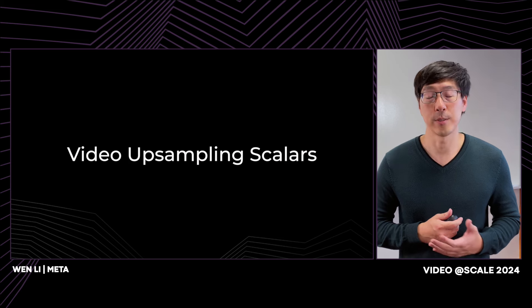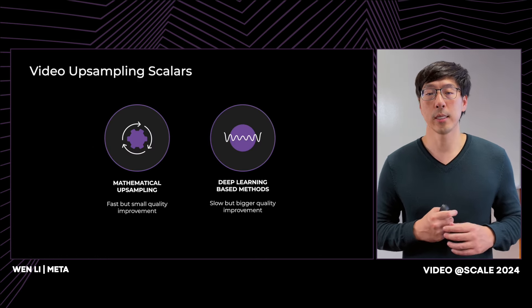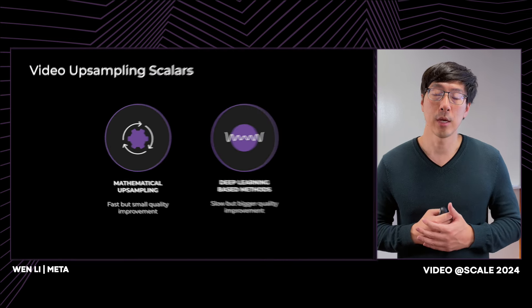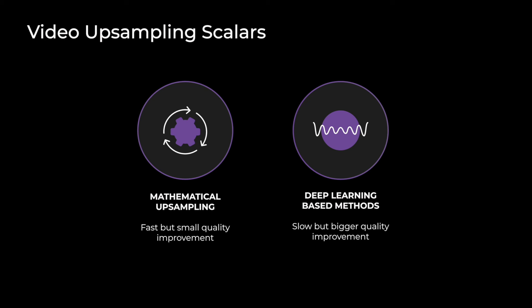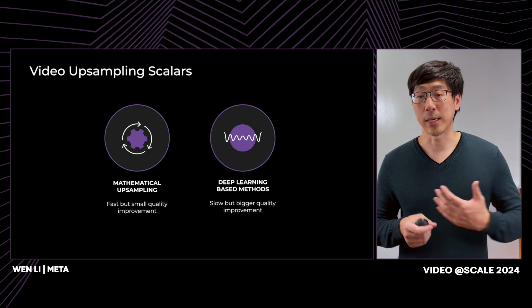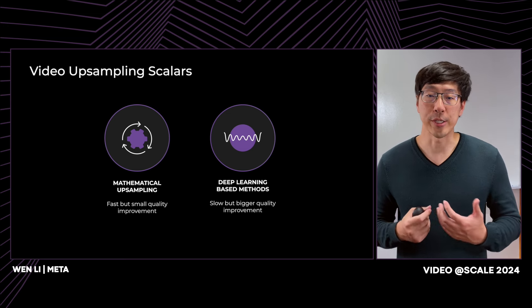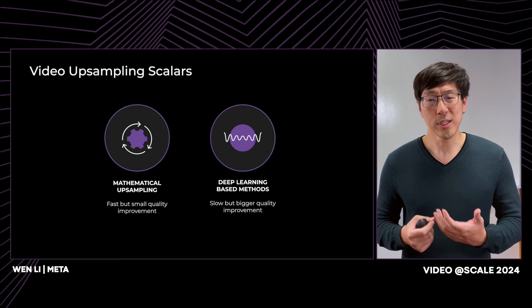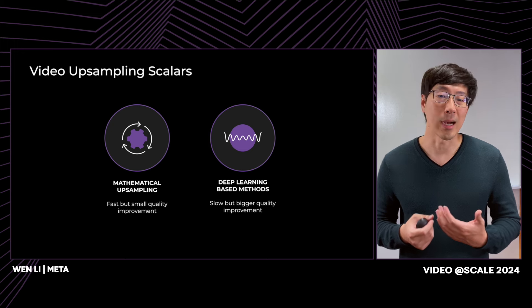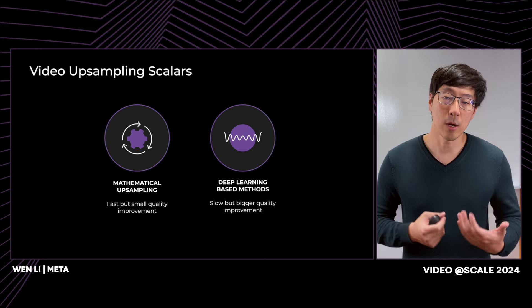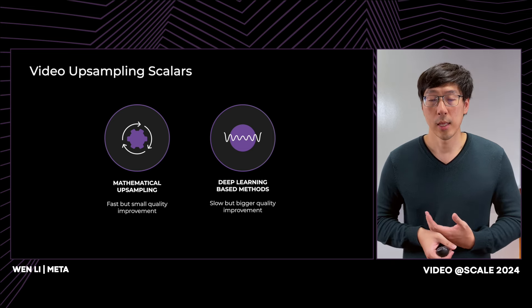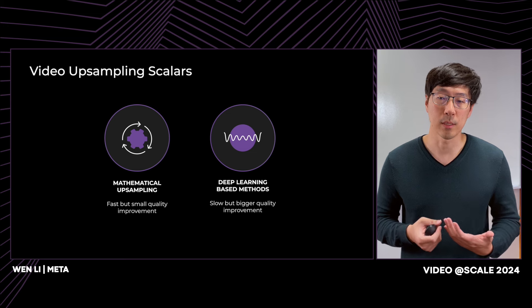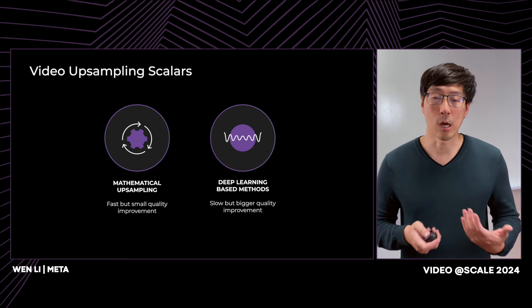There are typically two types of video upsampling technologies to improve video quality: mathematical algorithms and deep learning-based methods. There are also some generative AI transformer models being used for video upscaling, but they are not discussed in this presentation. Mathematical algorithms like Bicubic and Lanczos are in general very cheap and fast to run, making small quality improvements when upscaling to high resolution. Deep learning models, such as video super-resolution models, can provide more video quality improvements but have higher computational cost and longer processing latency.